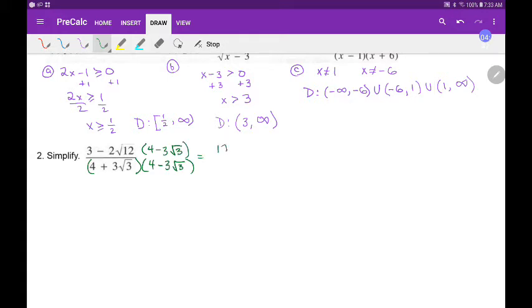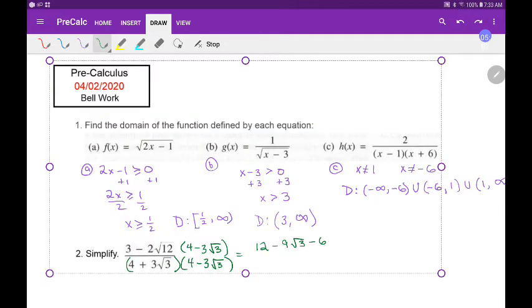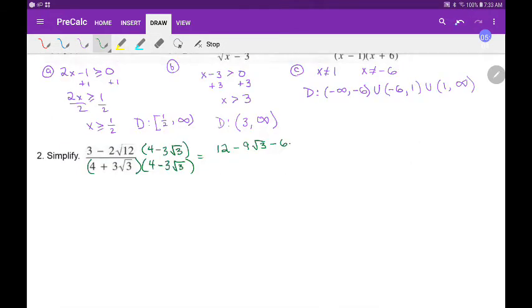So let's see, on the top we foil it and we get 12 and we get negative 9 square root of 3, and we get negative 8 square root of 3, is that right? Yep. And then positive 6 times the square root of 36.